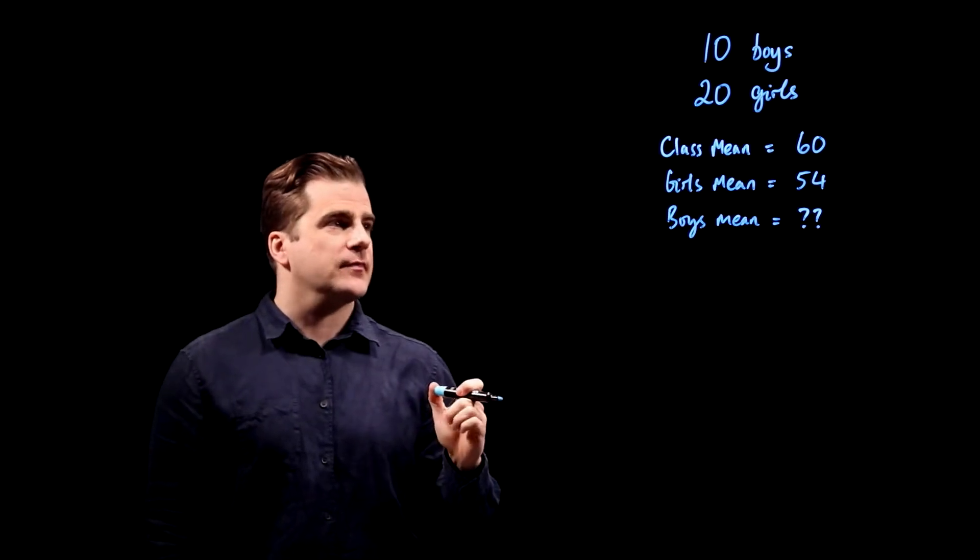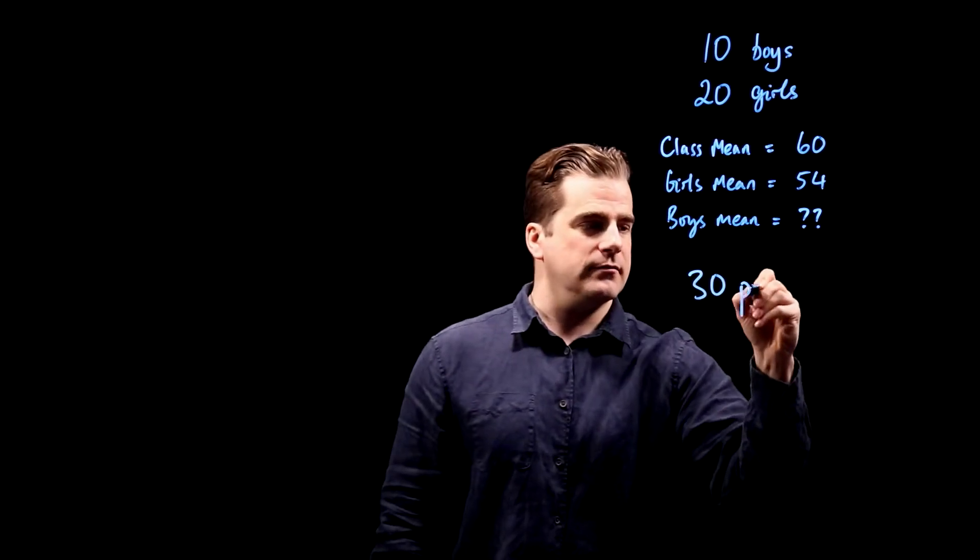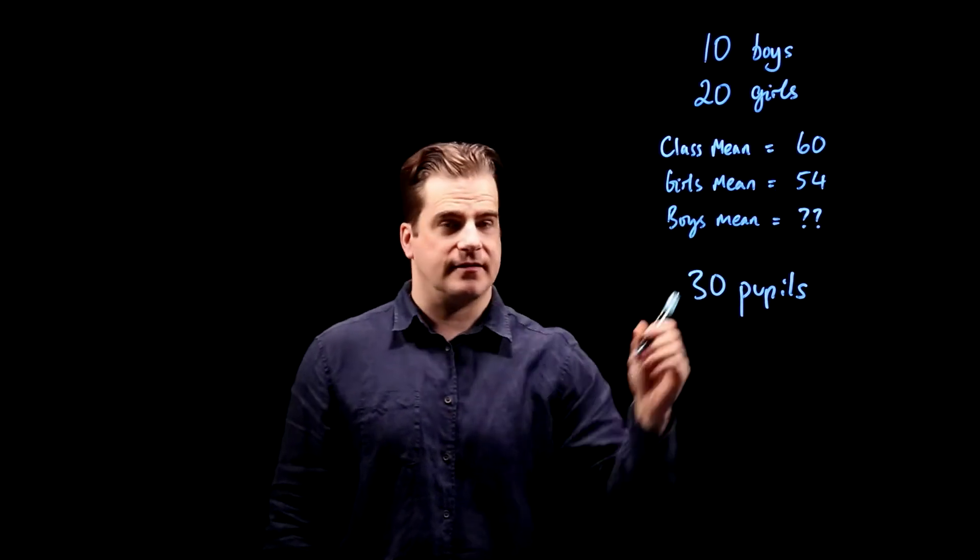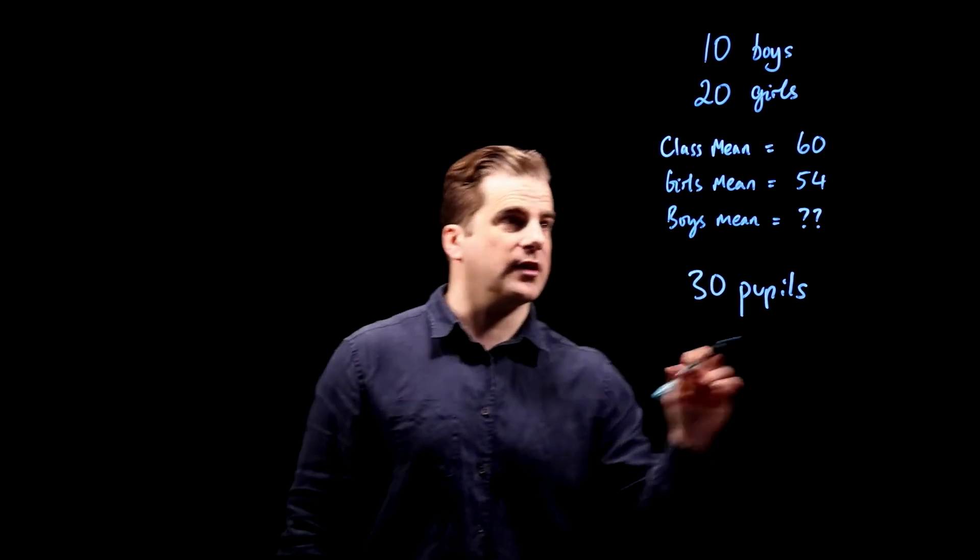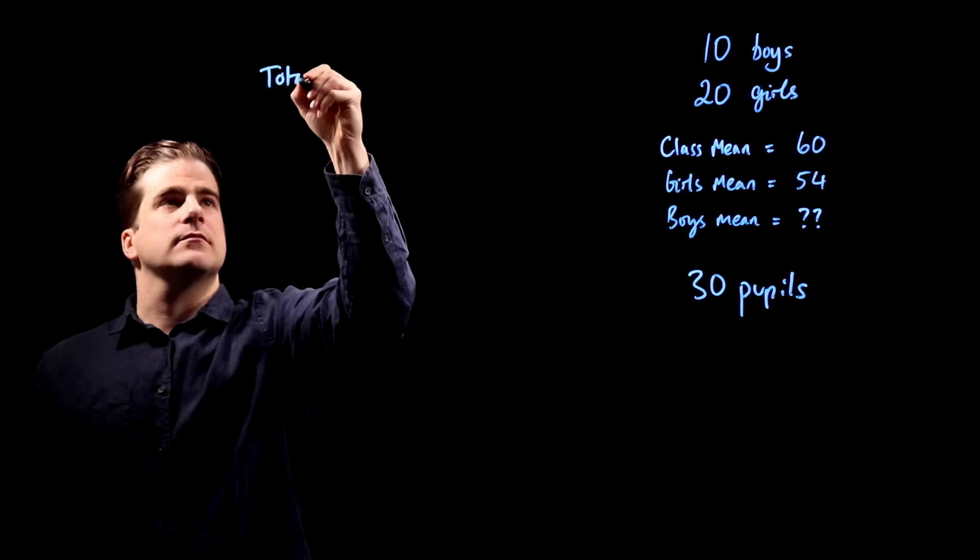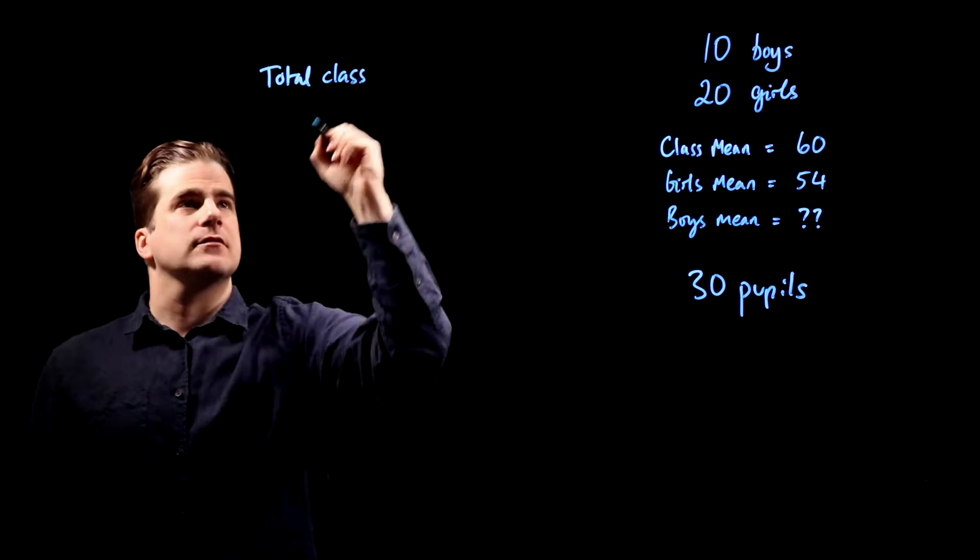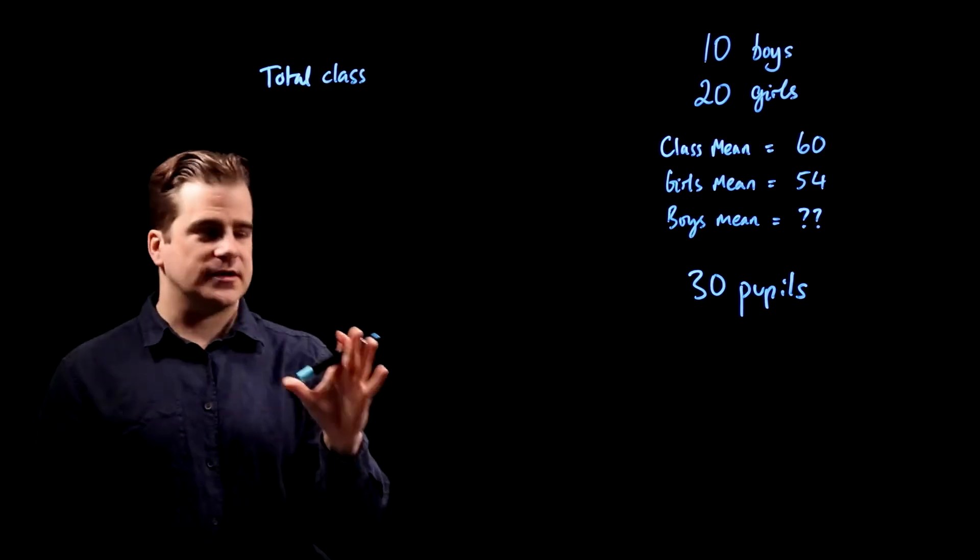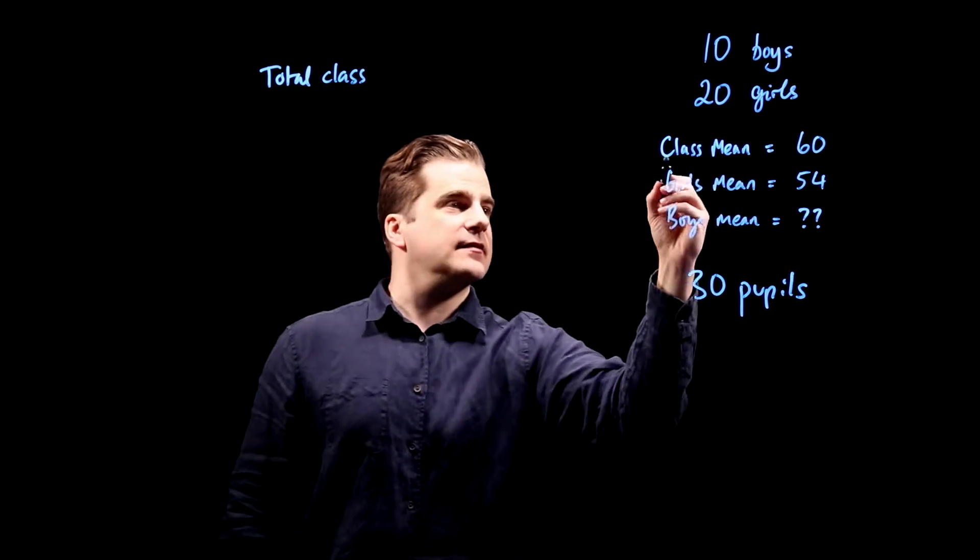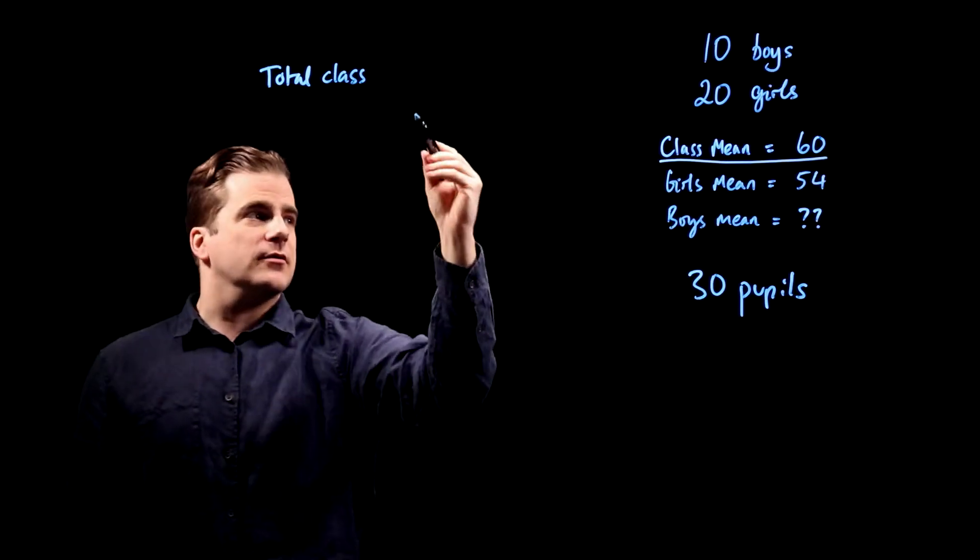So there are 30 pupils in total, and those 30 pupils have a mean score of 60. Therefore, you can say that the total for the class is... or actually, if the mean is 60, let's put that into an equation. Well, it's already an equation.